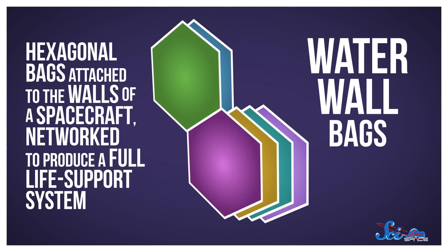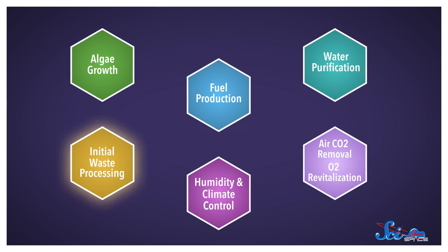These are hexagonal bags attached to the walls of a spacecraft that are networked to produce a full life-support system, using poo. There's a bag for initial waste processing, for growing algae to eat, for water purification, for humidity and climate control, for fuel production. It's got everything.